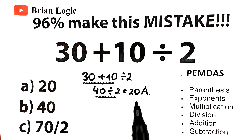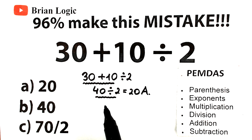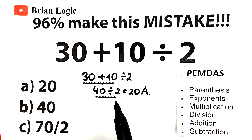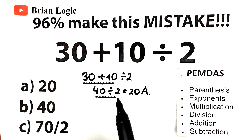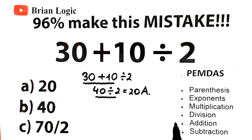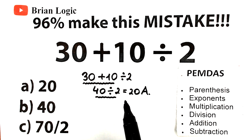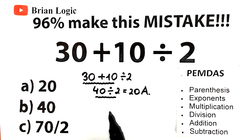Why is PEMDAS important? PEMDAS is important because we need to know what order to perform operations in to get the right answer. If we were to randomly perform the operations in a given expression, we could end up with many different incorrect solutions — only one of which is correct. Order of operations is what lets us correctly evaluate the expression. You use PEMDAS when there are two or more operations in an expression, and right here we have two operations, so this is a great case to use PEMDAS.